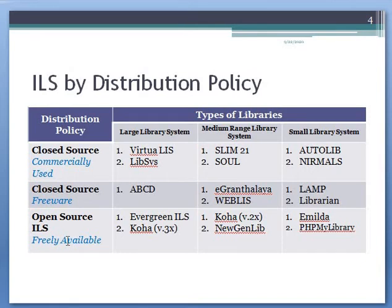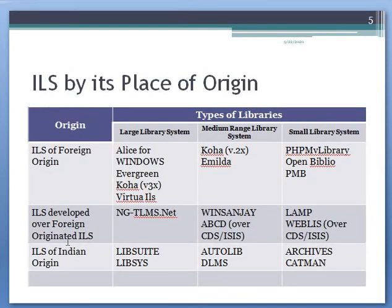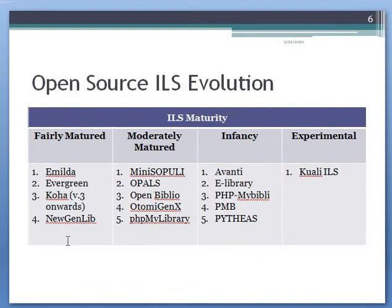If we distribute ILS according to its place of origin, we find three categories: ILS of foreign origin, ILS of Indian origin, and hybrid origin ILS.